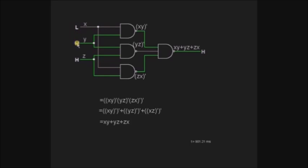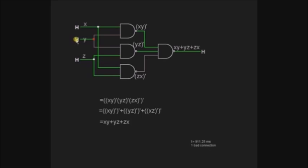We can verify like this by changing inputs. When only one is high, the output is low since the majority inputs are low. When the majority inputs are high, then the output is high. This is the majority logic circuit. Thank you.